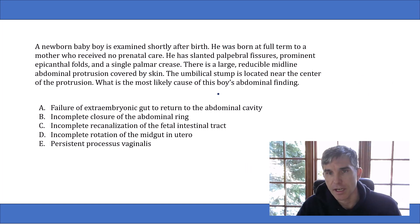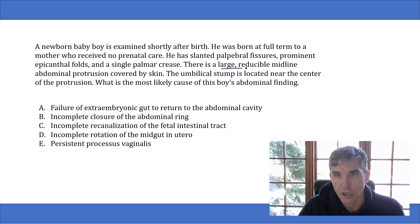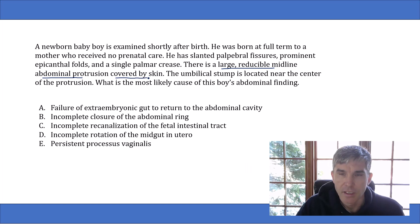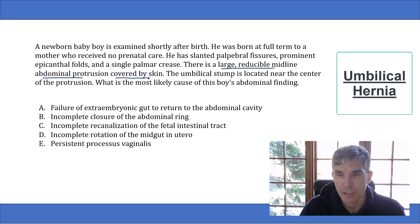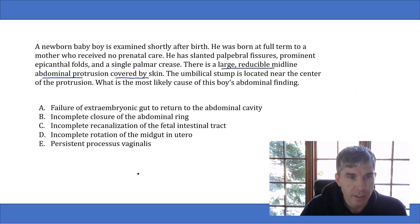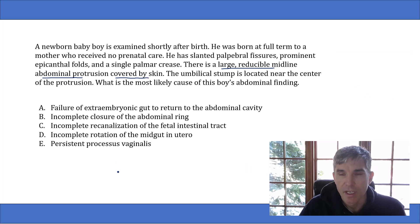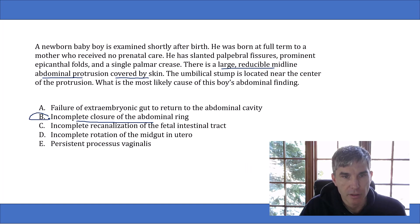Once you recognize this question is describing a baby with Down syndrome, the next step is to figure out what the large reducible midline abdominal protrusion covered by skin represents. This is a classic description of an umbilical hernia. Babies born with Down syndrome have a higher incidence of umbilical hernias compared to the general population. So the correct answer is choice B — incomplete closure of the abdominal ring — which is what leads to an umbilical hernia.